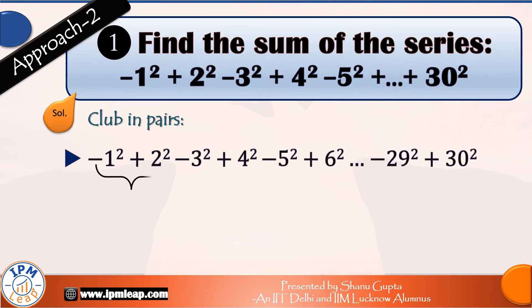So we club minus 1 square and 2 square, we club minus 3 square and 4 square, we club minus 5 square and 6 square, and so on. Our final pair would be minus 29 square plus 30 square, which we will club into one single value.